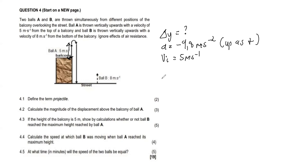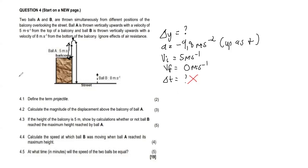When ball A is thrown upward, it will reach a maximum height. At the maximum height, the final velocity VF has to be 0 meters per second. We do not have delta T and we are not looking for delta T, so we cancel all formulas with delta T and use only the formula with delta Y.